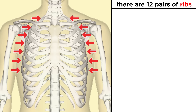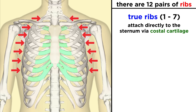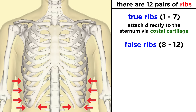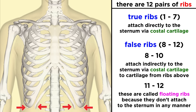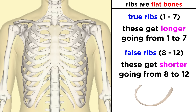Then there are twelve pairs of ribs that project from the vertebrae. The first seven pairs attach directly to the sternum via sections of costal cartilage, and these are called true ribs. Then there are five pairs of false ribs, three of which attach to the sternum indirectly, with costal cartilage joining the cartilage from ribs above, and then the last two are called floating ribs because they don't attach to the sternum at all. Ribs are flat bones that get longer going from pair one to pair seven, and then shorter again from eight to twelve.